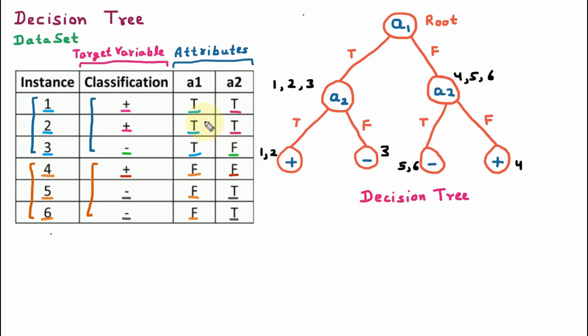So here using the given dataset we have calculated the entropy, information gain, and we have constructed the decision tree. That's all for today, thank you.